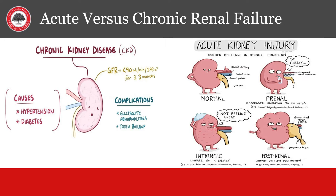Kidney failure has two main types: acute and chronic. Chronic renal failure is kidney disease over a long period of time, usually dealing with diseases such as diabetic nephropathy or an autoimmune disease like lupus. Acute renal failure, also called acute kidney injury, is new onset of renal failure and has three types. First is pre-renal, or before the kidney, like dehydration, blood loss, or fluid immobilization problems like cirrhosis or heart failure. Next is intrinsic, which deals with a direct attack on the kidney like acute tubular necrosis or ATN. Last is post-renal, which is obstruction of the urine outflow like with kidney stones or an enlarged prostate in men.